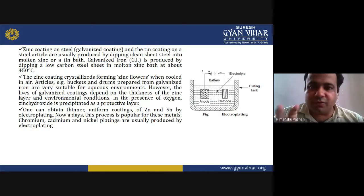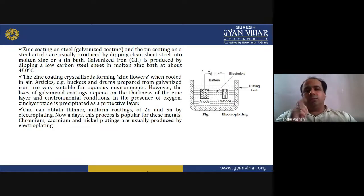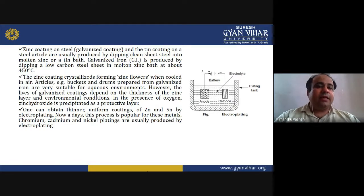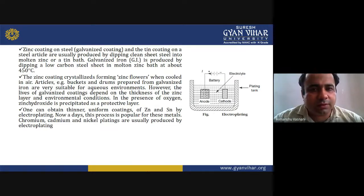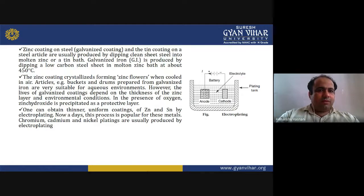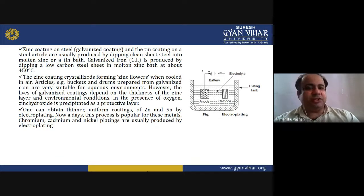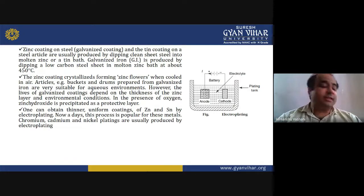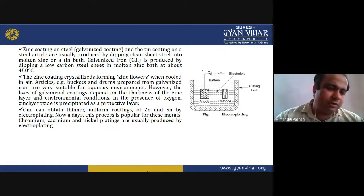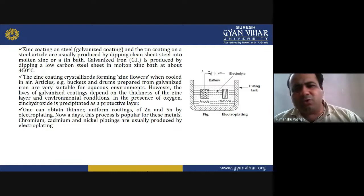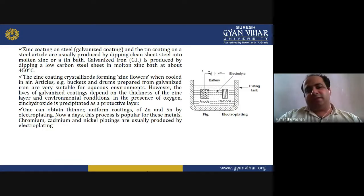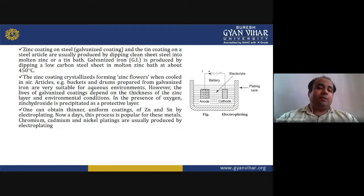The zinc coating on steel is known as galvanized coating. The most common coating and the tin coating on a steel article are usually produced by dipping clean sheet steel into molten zinc or a tin bath. Galvanized iron (GI sheets) is produced by dipping a low-carbon steel sheet in molten zinc at about 450°C.